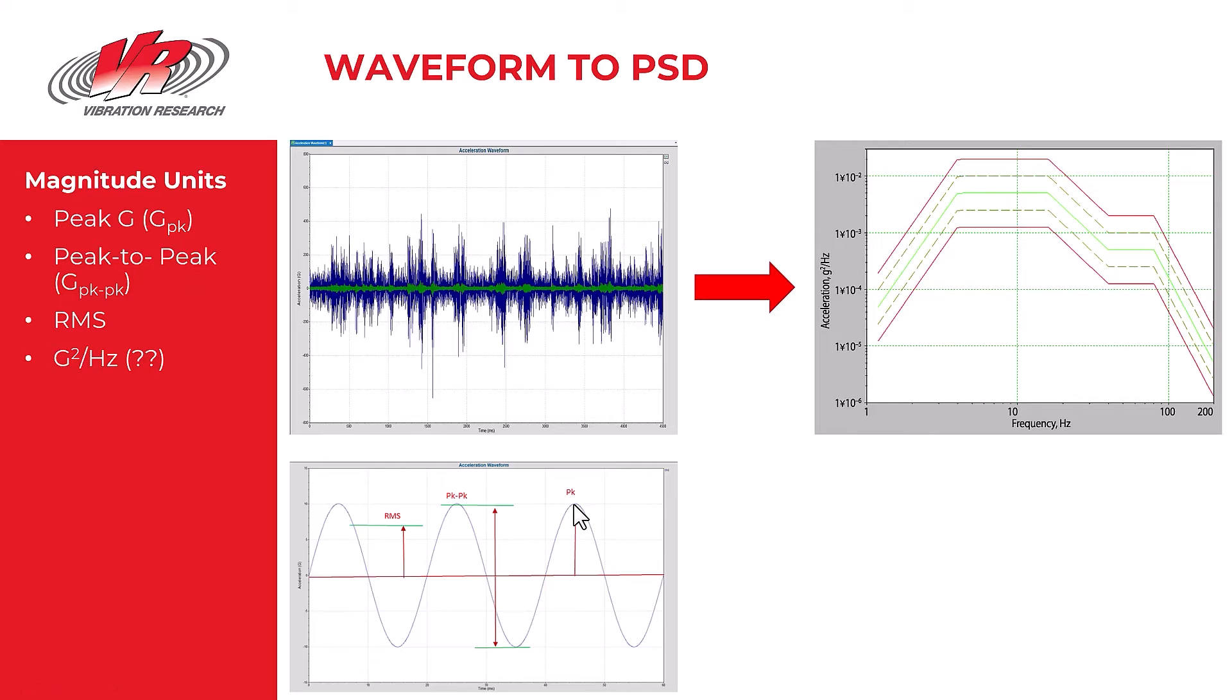A peak value can also be measured in both the positive and negative direction and the measurement between the peak positive and the peak negative is called the peak to peak value. So we might speak of this particular test having say a 10 G peak value, you might also refer to its peak to peak value.